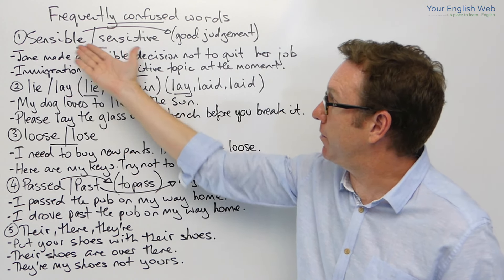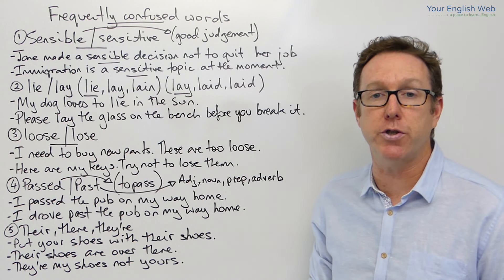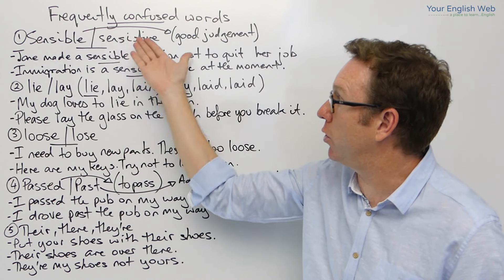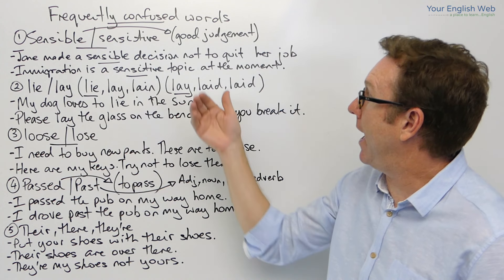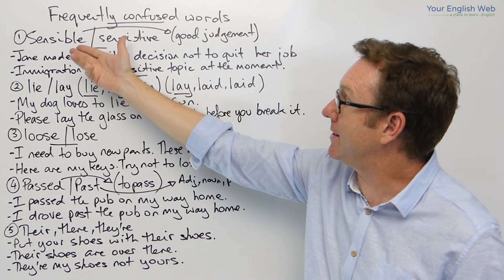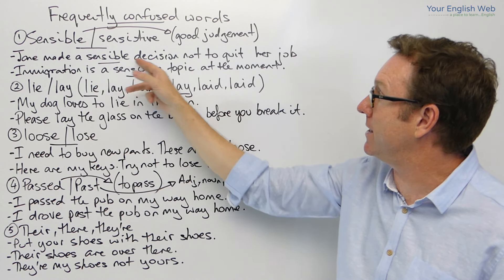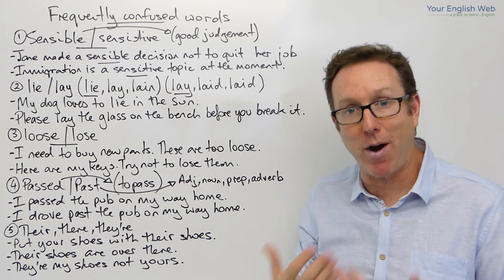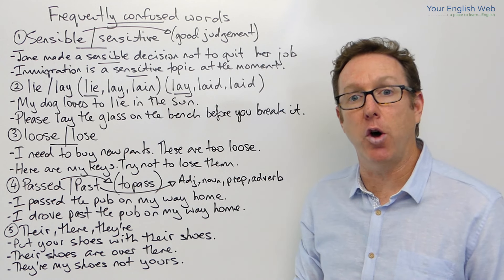Now, the first one is sensible and sensitive. And this is particularly difficult for certain language backgrounds. For example, Spanish speakers confuse these two words because they are a false friend in Spanish. But to clarify the difference between the two, sensible means good judgment. So, Jane made a sensible decision not to quit her job — good judgment. She made a practical decision or she decided well not to quit her job.